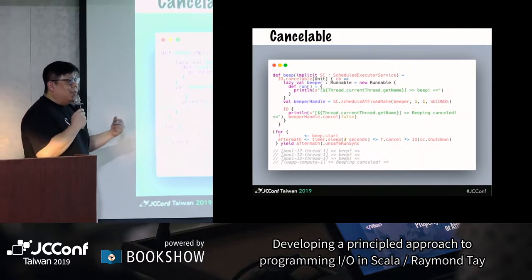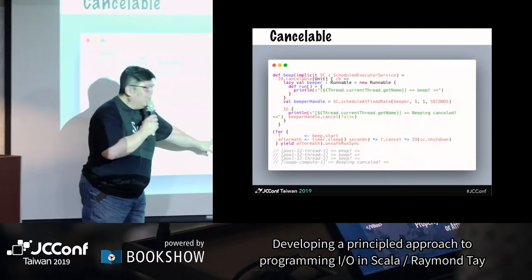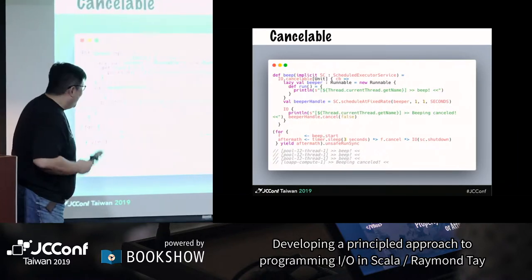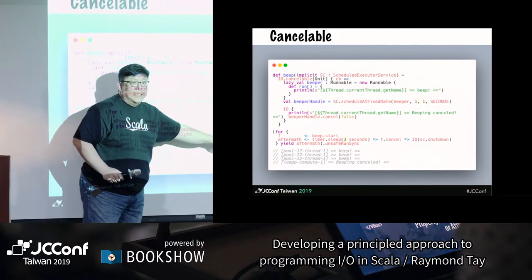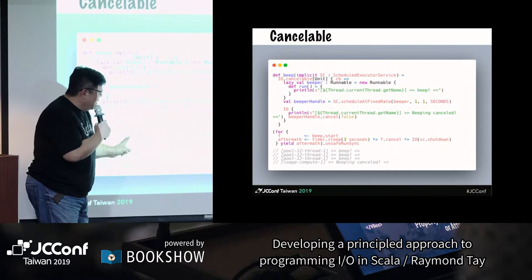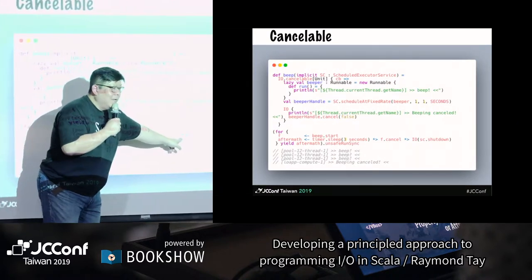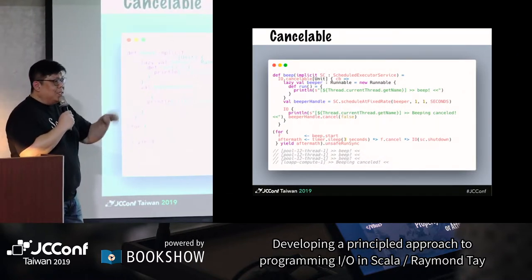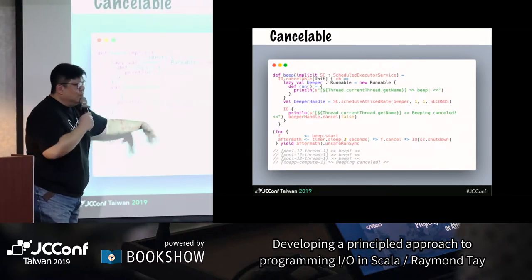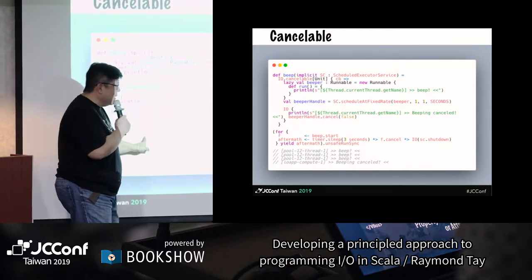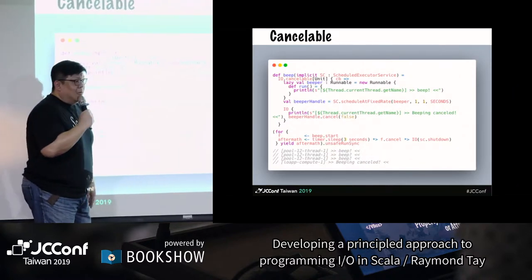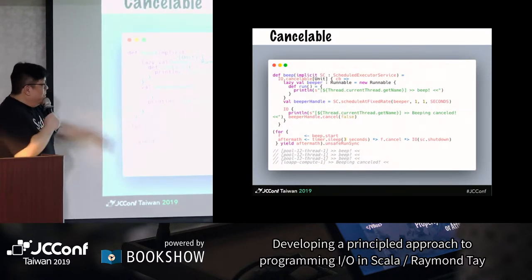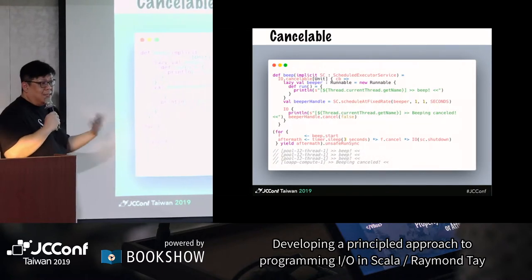In the main program I basically say: I start the beeper, sleep for three seconds, then hit cancel, and shut down the whole thing. CATS effect, or rather the CATS ecosystem, provides this idea of composition. Do you know what the *> symbol means — the star and right arrow? It means applicative sequencing: run this guy first, ignore the result, run this next guy, ignore, and run. This is different from monadic binding, where you'd use the result of a previous computation. Here I completely ignore it — I just want the effect: sleeping for three seconds, cancelling, and shutting down the execution context. When you run this, you'll see it beeping three times, and after that a cancel is issued.